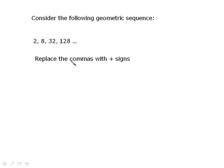Now if you took that geometric sequence and you replace the commas with plus signs, you'd get this: 2 plus 8 plus 32 plus 128 plus so on. What you've got now is you have a geometric series. That's really all that a geometric series is.